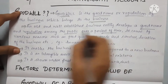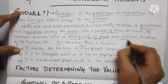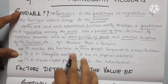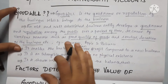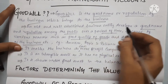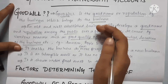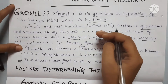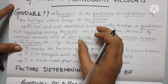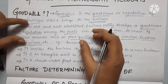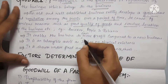Over a period of time, because of various reasons such as good quality of goods, service, location of the business, etc. For example, Amazon, Apple phones — these are examples of companies with goodwill. Goodwill is built on reputation.